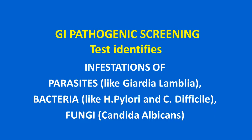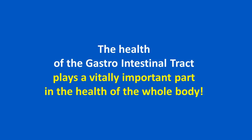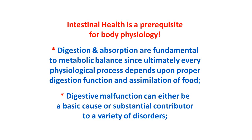Next we have the GI pathogenic screening test. This test identifies pathogens and infections. It can identify infestations of parasites like Giardia lamblia, bacteria like H. pylori and C. difficile, and fungi, which is commonly known as Candida albicans. The health of the gastrointestinal tract plays a vitally important part in the health of the whole body. Intestinal health is a prerequisite for body physiology. Digestion and absorption are fundamental to metabolic balance, since ultimately every physiological process depends upon proper digestion and assimilation of food.